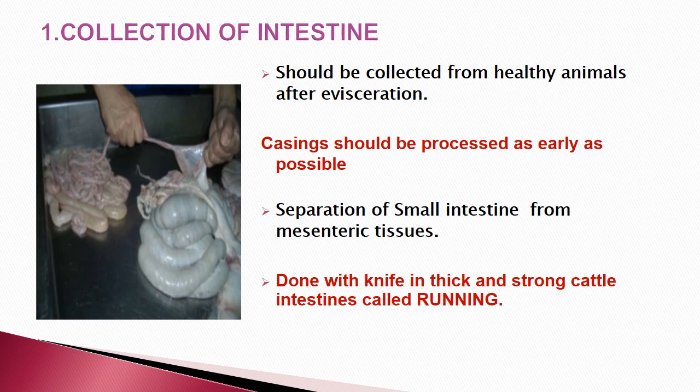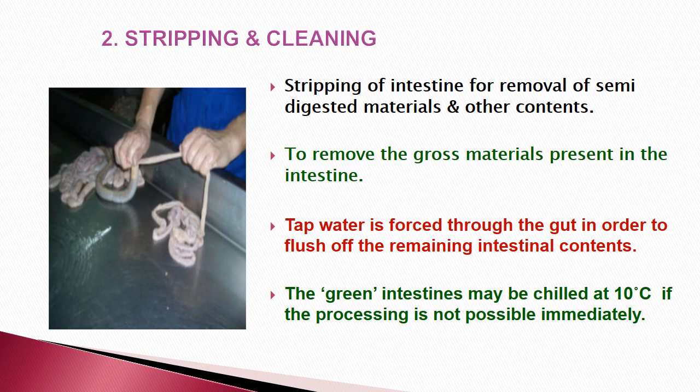After removing the GI tract, the separation of small intestine from mesenteric tissues is done by pulling; for large animals a knife may be needed to remove intestinal attachments — this is called running. Stripping removes semi-digested materials and other contents from the intestine. The green intestine may be chilled at 10°C if processing is not immediately possible. After stripping, water is flushed through to clean, and it can be stored in a refrigerator if not processed immediately.